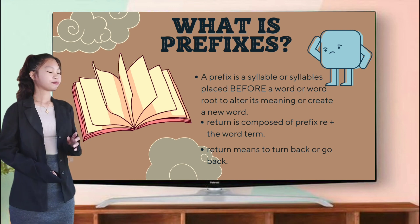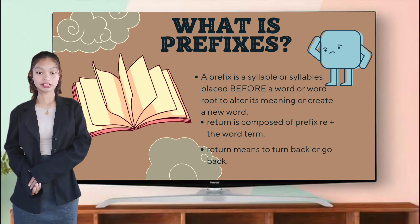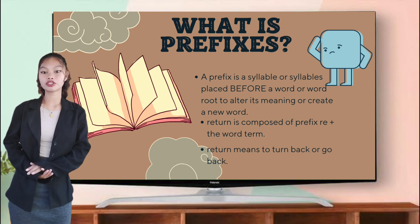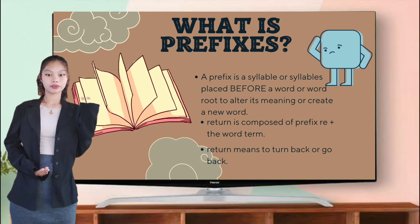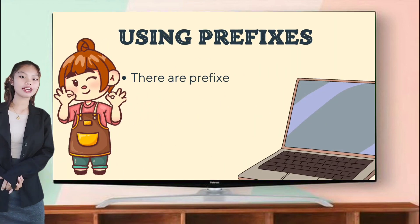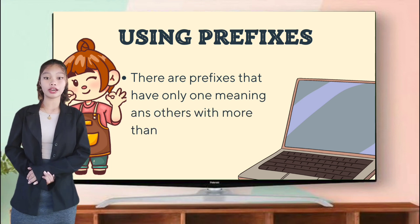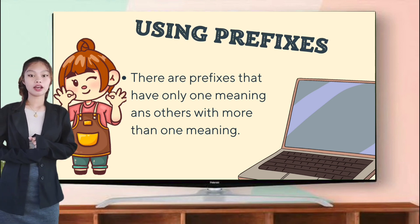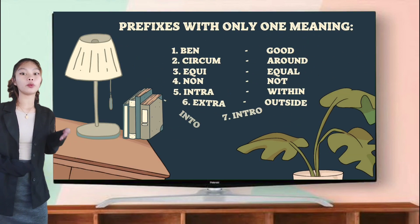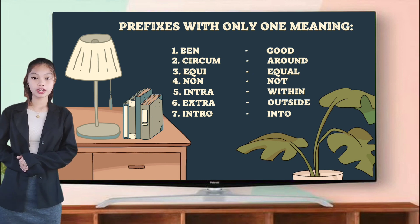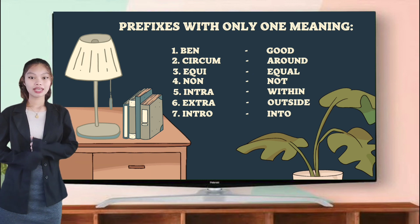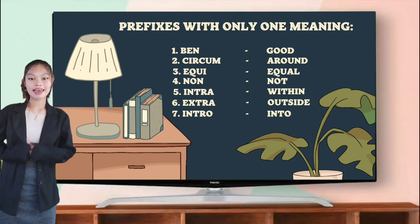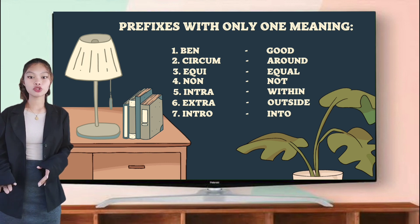For example, 'return.' Return is composed of prefix 're' plus the word 'turn.' So 'return' means to turn back or to go back. Okay, there are prefixes that only have one meaning and others with more than one meaning. For prefixes with only one meaning: 'ben' means good, 'circum' means around, 'equi' means equal, 'non' means not, 'intra' means within, and 'extra' means outside.